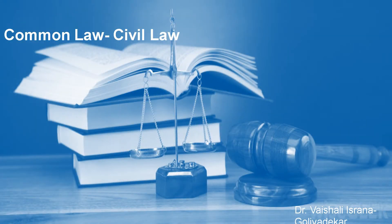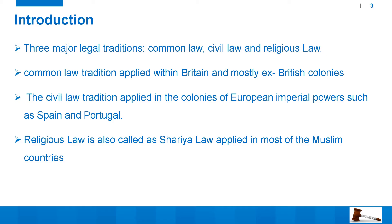In today's lecture, we are going to see two major legal systems in the world: common law legal system and civil law legal system. There are three major legal traditions or legal structures present in today's world and they are common law, civil law and religious law.